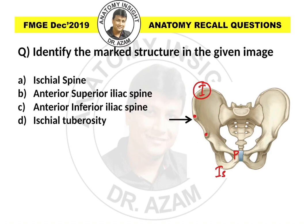The spine above will be known as the anterior superior iliac spine, and the spine below will be the anterior inferior iliac spine. Therefore, the marked structure in the given image is the anterior superior iliac spine. Hope this will help you — like, share, and subscribe to my channel. Thank you.